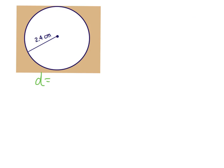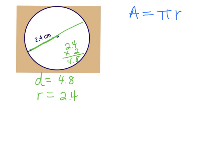Let's try another one — we'll find the approximate area. First, let's write down the diameter and the radius by the circle. This time it gives us only halfway across the circle, so that's the radius: 2.4. The diameter would be double that, so 2.4 times 2 equals 4.8. Now write the formula: A equals pi r squared. Pi is 3.14, and the radius is 2.4, which we need to square.